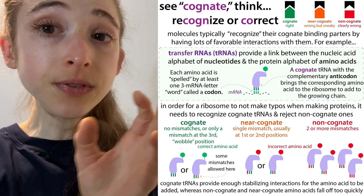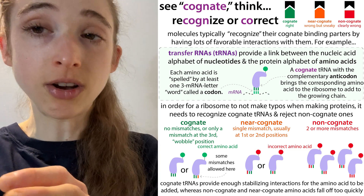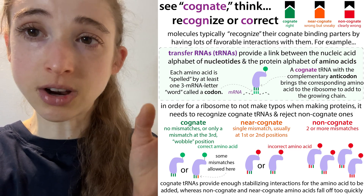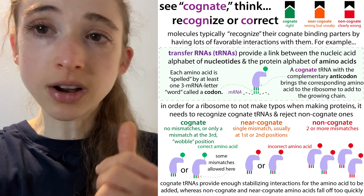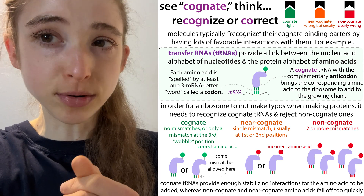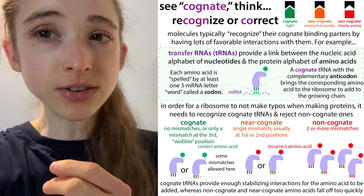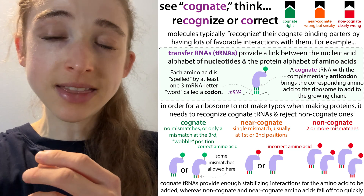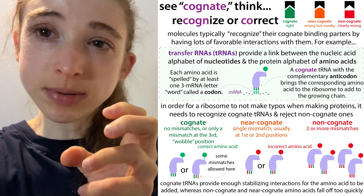If they're perfect matches, then you have this cognate match and all goes according to plan: you have stable binding, you get the conformational change, you get the hydrolysis, everything gets shifted over — all's good. But what if something goes in there that isn't supposed to be there — a non-cognate tRNA? Well, now the interactions aren't strong enough for things to hold, and you don't get that stabilizing interaction and that shape change in the ribosome.